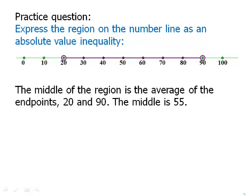So 55 is the center. Now the question is, how far do we move away from that center? Well, 90 is 55 plus 35. 20 is 55 minus 35. So we start at that center, 55.